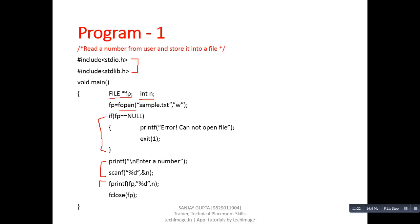We then store that number into a file using the fprintf statement. While printf displays content on the console, fprintf writes contents into a file. It has three arguments: first is fp (the file pointer), second is %d (the format specifier), and third is n (the variable). Using fprintf, we transfer the data into a file. After this, we close the file using fclose so that all the data is permanently transferred to the hard disk.